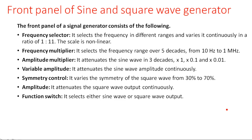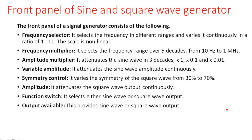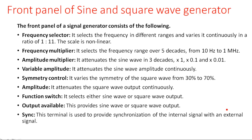The function switch selects either sine wave or square wave output. The variable output provides the sine wave or square wave signal. The sync terminal is used to synchronize the internal signal with an external signal — when connecting an external supply, the external signal can be synchronized with the internal signal. Another front panel control is the main on/off power switch.